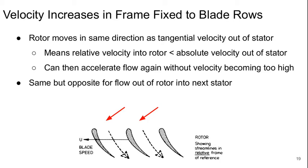So the velocity increases in the frame of reference that's fixed to the blade rows for turbines. So the rotor is moving in the same direction as the tangential velocity out of the stator. This means the relative velocity into the rotor is less than the absolute velocity out of the stator. So we can then accelerate the flow again without the velocity becoming too high. And the same, but the opposite thing is true for the flow going out of the rotor and into the next stator. So it's this reference frame switching that allows us to continuously accelerate the flow, in a sense, without the actual velocity magnitudes growing continuously.